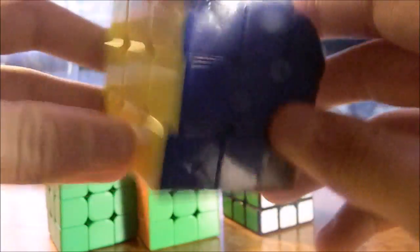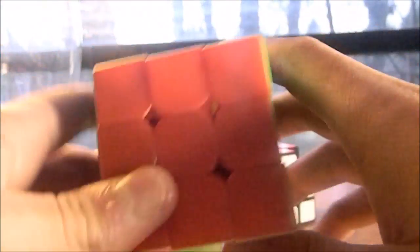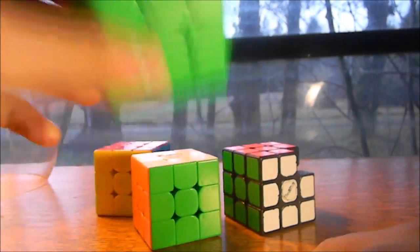Here we have a Cyclone Boys budget cube that we burnt. 50mm Moyu 3x3 Rubik's brand. Here we have a Yushin Black Kirin. I have another green force cube. This looks pretty nice.